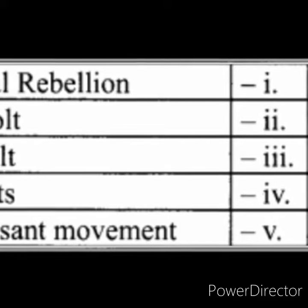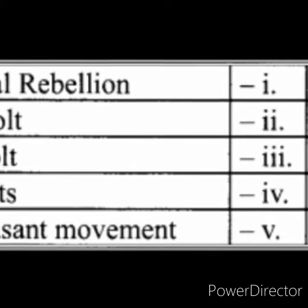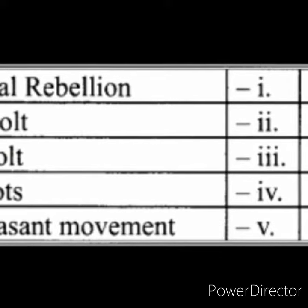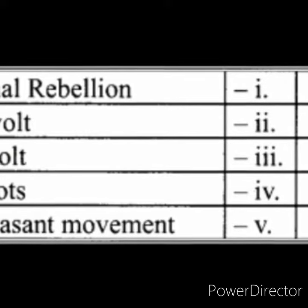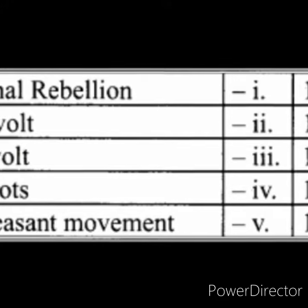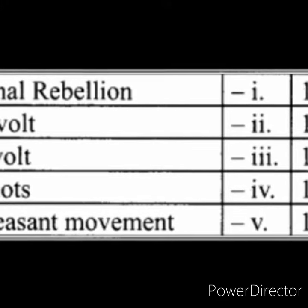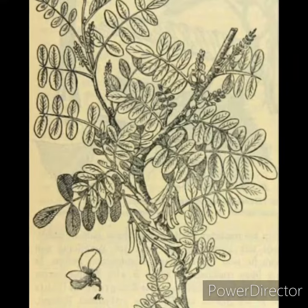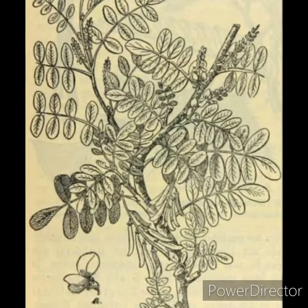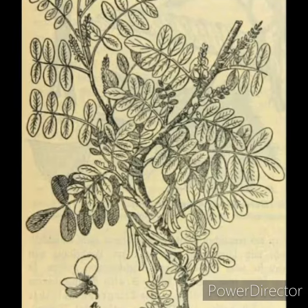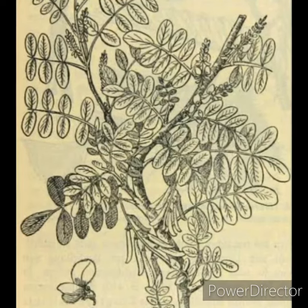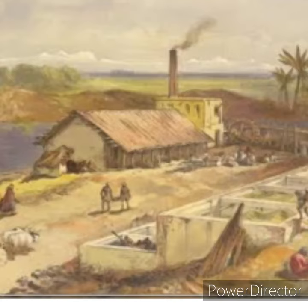In Peasants' Revolts, we already learned about the Santhal Rebellion which held in the hills of Rajmahal in Bihar. Now you are going to learn about the Indigo Revolt. Indigo is a plant which is used in textile industries to dye the cloth and give color to the cloth.